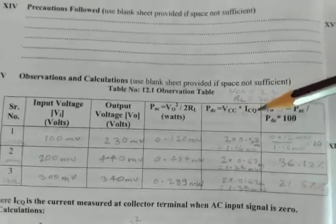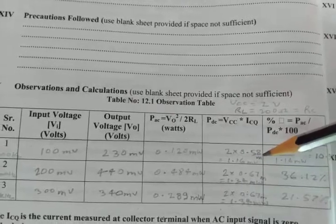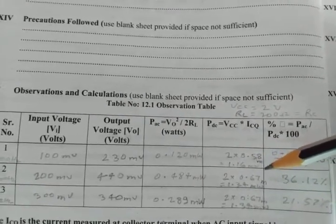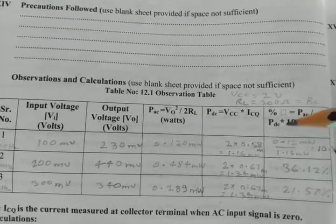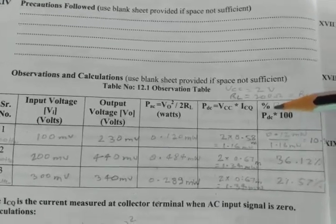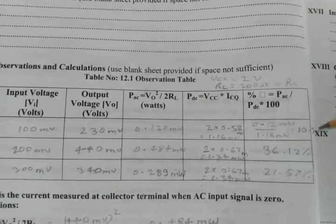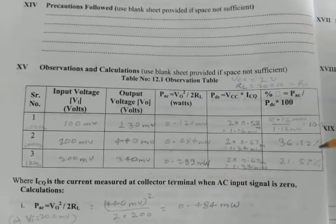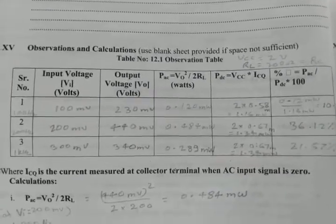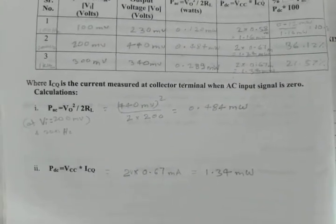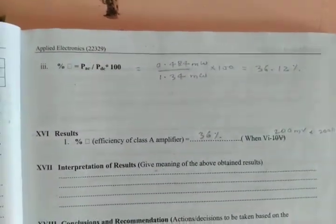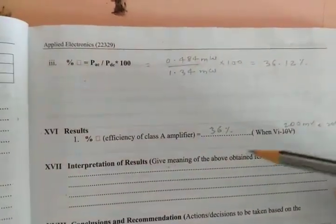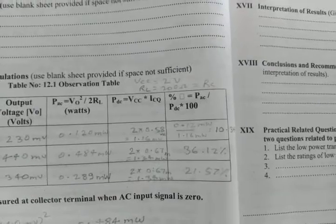We are calculating the VCC into ICQ. If VCC given is 2 multiplied with the ICQ measured, we are getting 1.16 milliwatt DC power, that is the input power. Efficiency is calculated as the output power, AC output power by the DC input power multiplied with 100 since we are expressing in terms of percentage. We are getting for the first reading 10.31 percent, then for the second reading we are getting 36.12 percent, and third reading 21.57. Here is sample calculation for the second reading we are calculating the PAC, PDC and finally the efficiency of the Class A power amplifier.